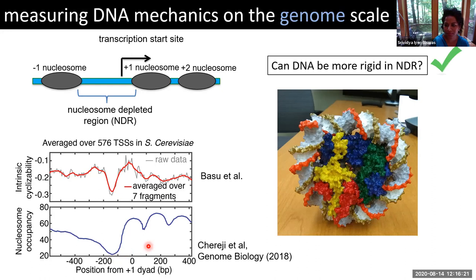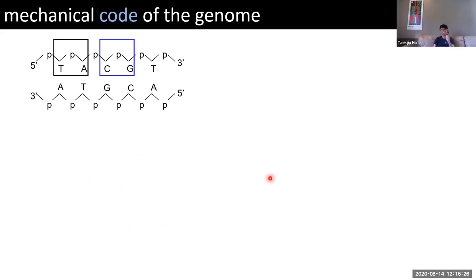So yes, the point is that DNA is indeed more rigid in NDRs. And then we can look at the sequence to try to decipher the mechanical code of the genome.